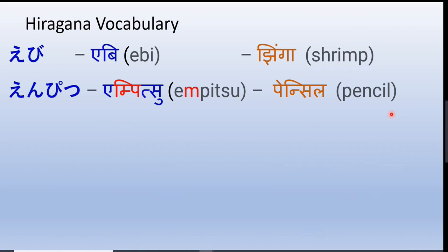Enpitsu means pencil. Here, we have written it with an N, but when we pronounce it we replace this N with an M sound — Enpitsu. This is done to make pronunciation easier. So from the alphabet point of view it is N, but when we pronounce it, it sounds like M. Enpitsu — pencil.